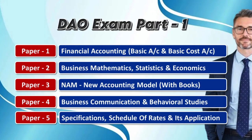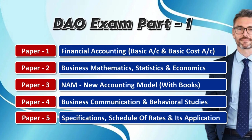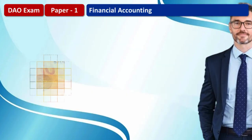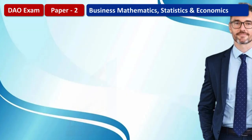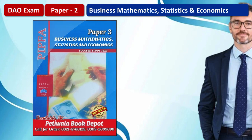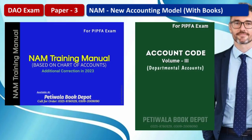DAO Part 1 exams have 5 papers. Paper 1: Financial Accounting, Basic Accounting plus Basic Cost Accounting. Paper 2: Business Mathematics, Statistics and Economics. Paper 3: New Accounting Model. Paper 4: Business Communication and Behavioral Studies.